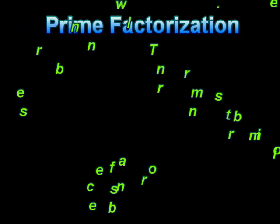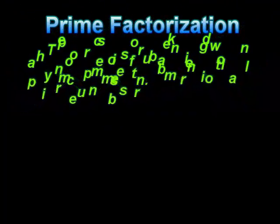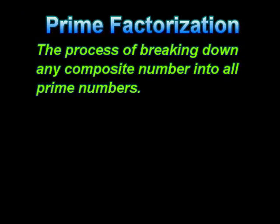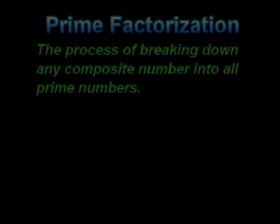Prime factorization is simply the process of breaking down any composite number into all prime numbers. As a matter of fact, any composite number can be broken down into prime elements. We are going to use the example of 450, which is a composite number, and break that number down into all prime numbers.